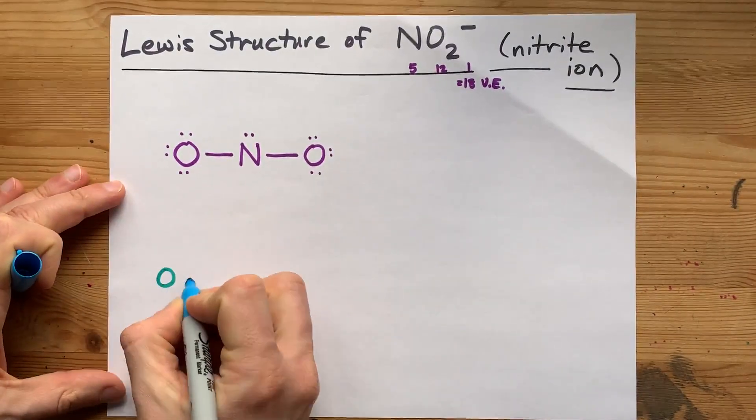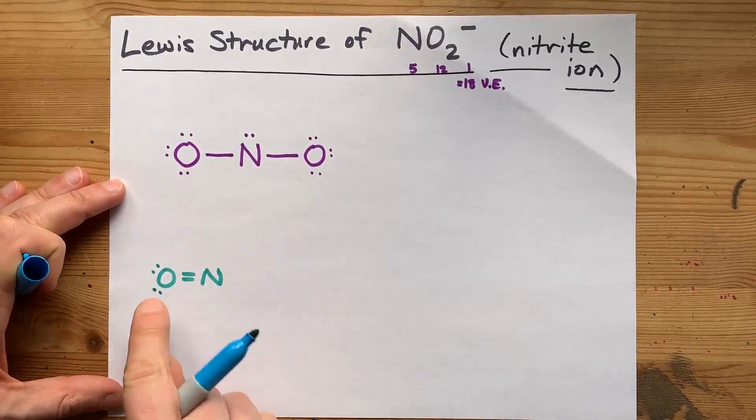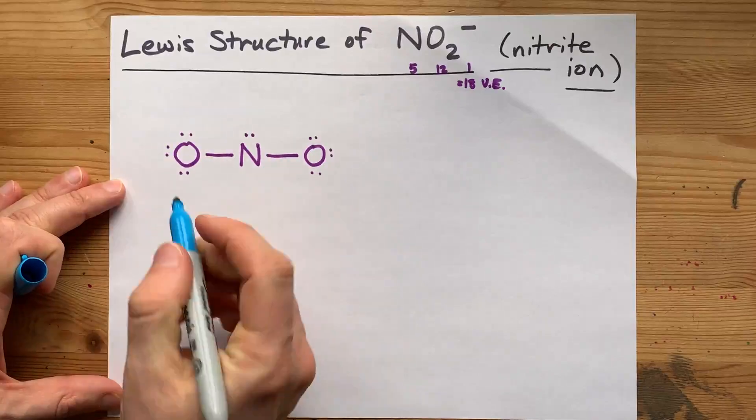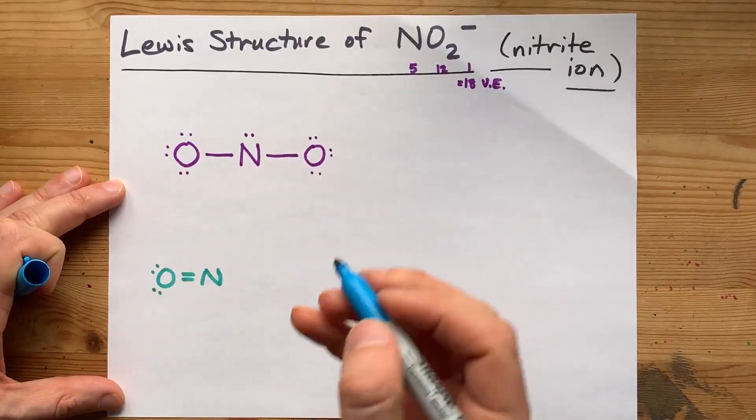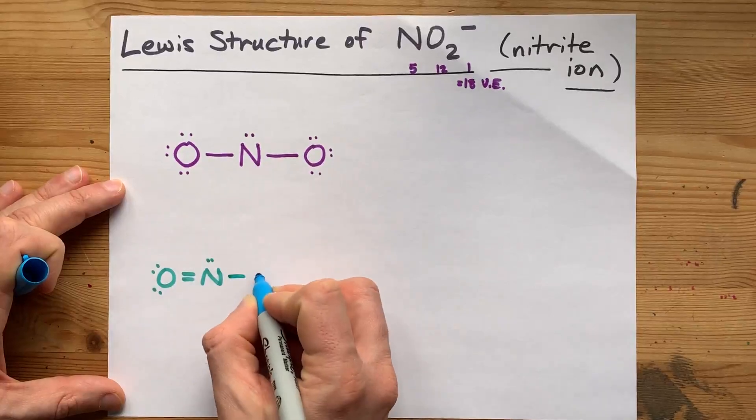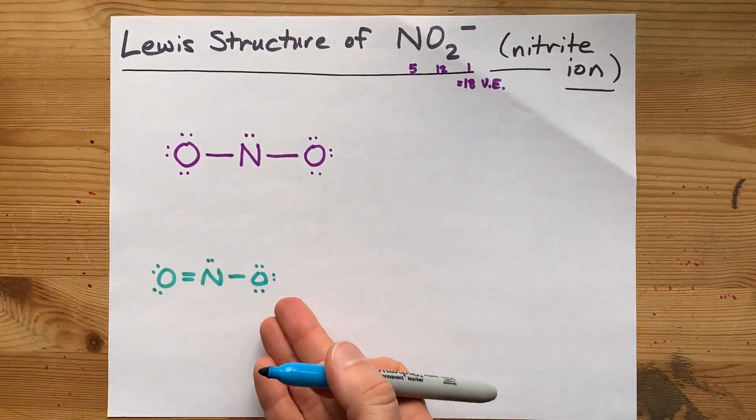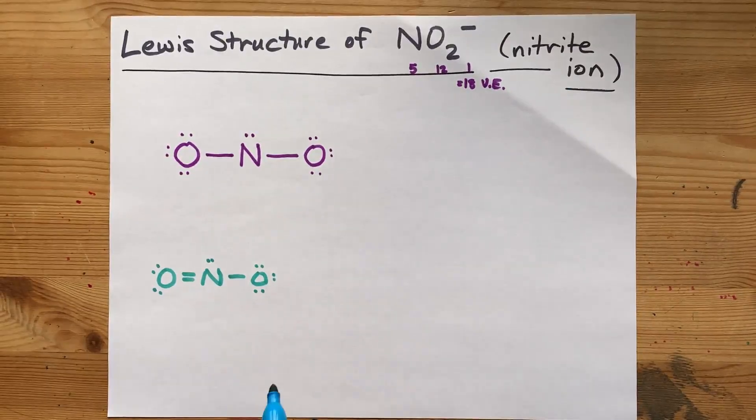If I draw you a double bond between the left-hand oxygen and nitrogen, that leaves me with just two lone pairs here because I'm getting rid of that one, moving it into the double bond. I still have the lone pair on nitrogen, and this oxygen is still single bonded. That's a valid Lewis structure for the nitrite ion.